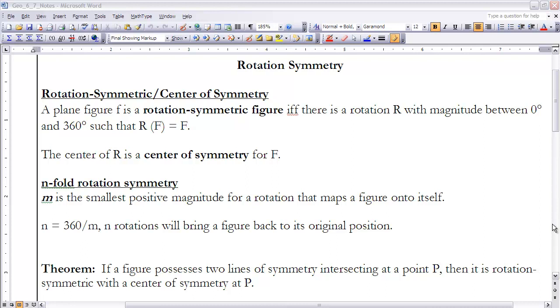Here's our definition: a plane figure F is a rotation-symmetric figure if and only if (IFF is just shorthand for if and only if) there is a rotation R with magnitude between 0° and 360° such that the rotation of figure F is F. In other words, if there's any measure anywhere between 0° and 360° such that when I turn or rotate the figure that degree, it will land right back on top of itself.